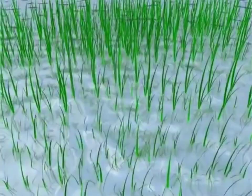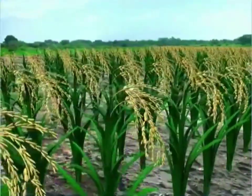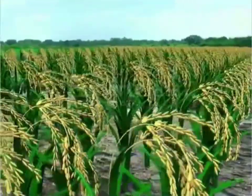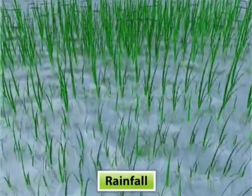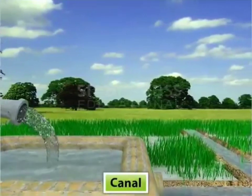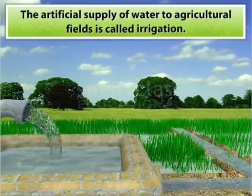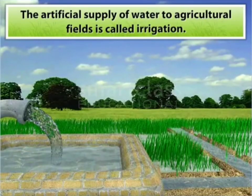We know that rain is the natural source of water, but rain is seasonal. Therefore, irrigation is done from artificial sources like wells, tube wells, ponds, lakes, or dams. The supply of water to the agricultural field from these sources is known as irrigation — that is, irrigation is the artificial supply of water to the crop field.